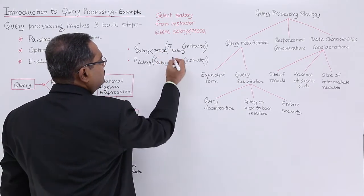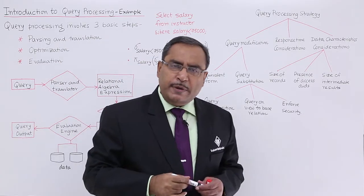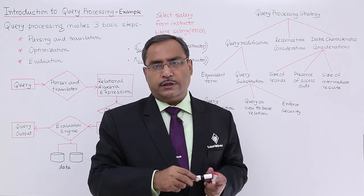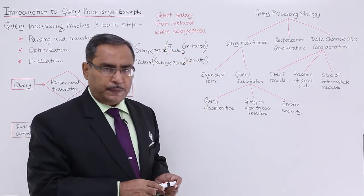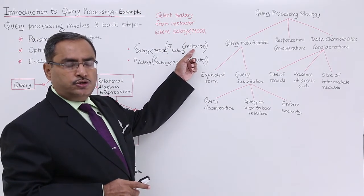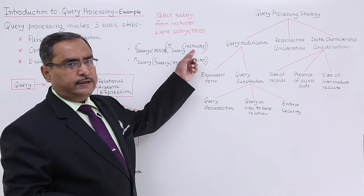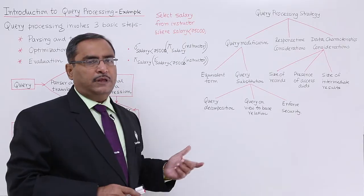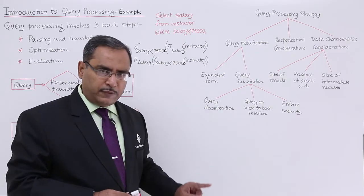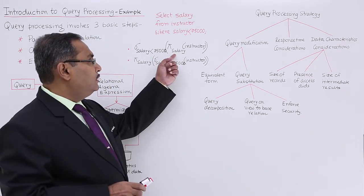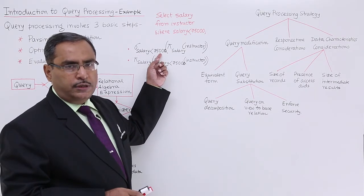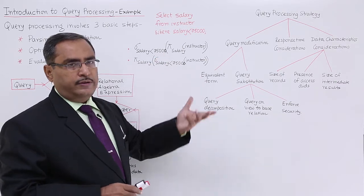So these are the two relational algebra expressions. Now, as mentioned, the instructor table has 5,000 records. When you apply π(salary) on instructor first, only the salary attribute is selected — but it is dealing with all 5,000 values, one value per record. Then on those 5,000 values, it applies σ(salary < 75,000) to obtain the result.